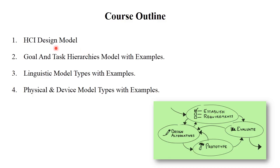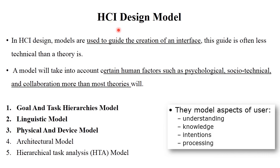The first and main point is: what is a Design Model? In HCI Design, models are used to guide the creation of an interface. This guide is often less technical than a theory. A model describes how a system will exactly look or work in the future. A model takes into account certain human factors such as psychological, socio-technical, and collaboration — more than most theories will. So, a model is basically a kind of blueprint or prototype of your system. In your syllabus, there are total 5 types of models.